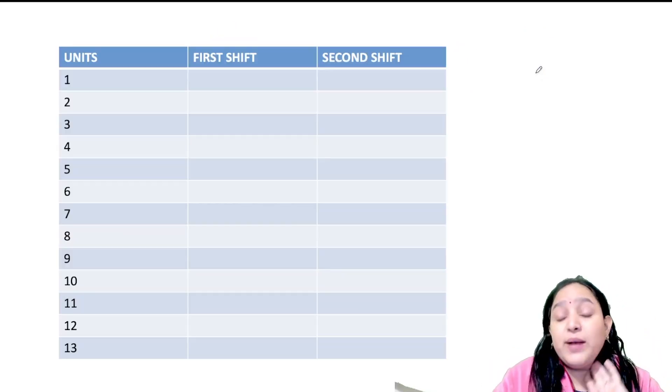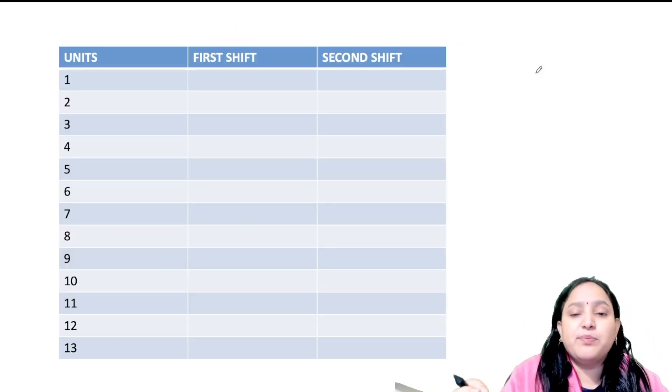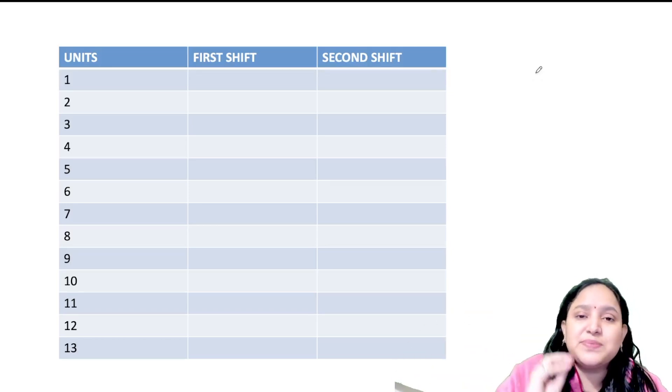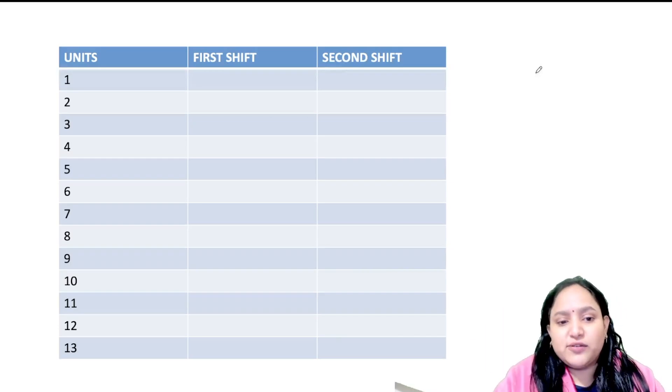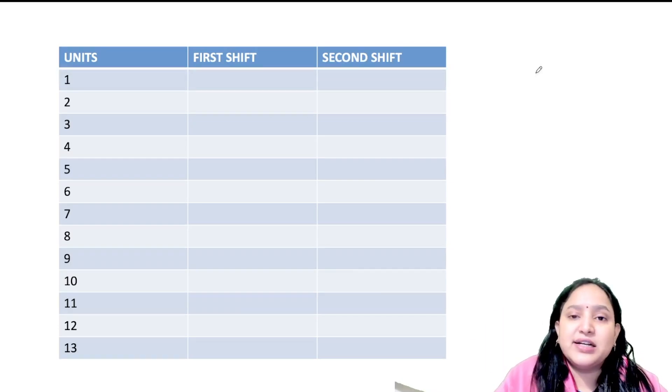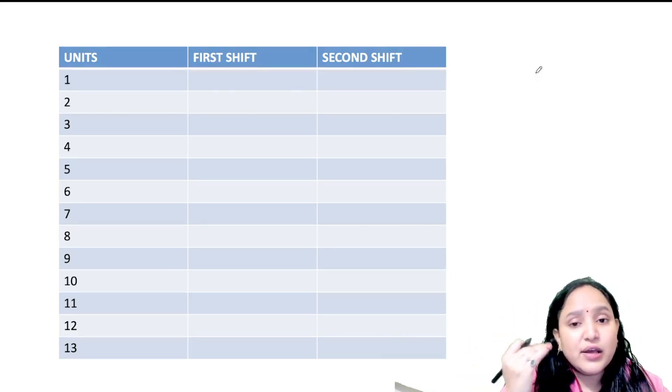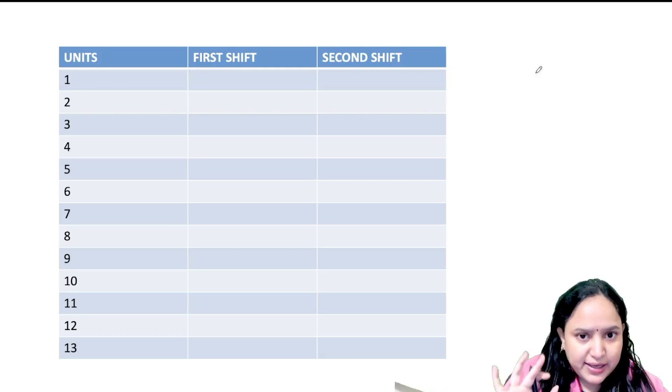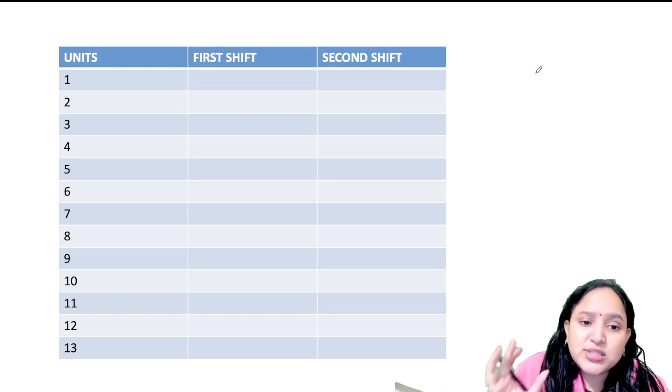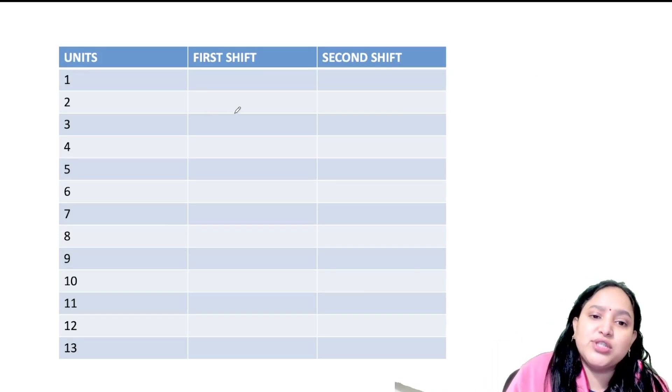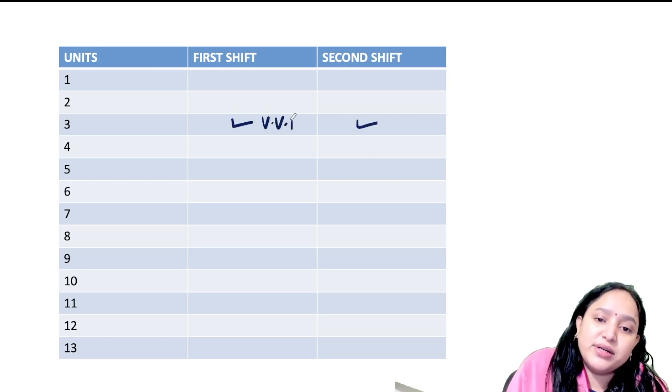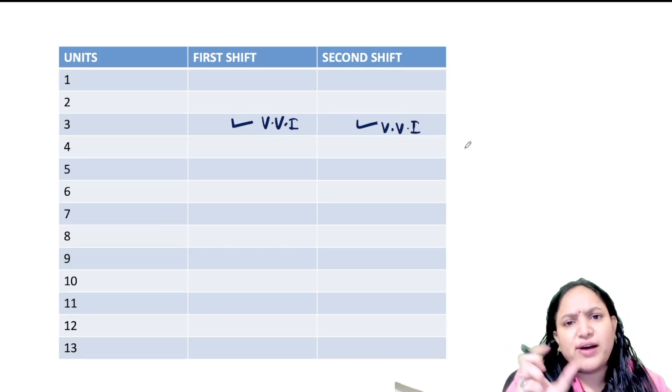What you need to know is which unit is important in which shift. The two shifts, which are the most important in the first shift or the second shift. So I will mark most important and then there will be least important in the least important category.